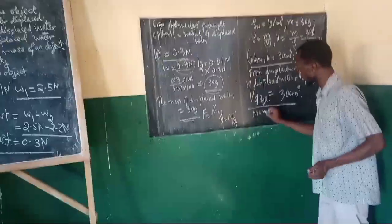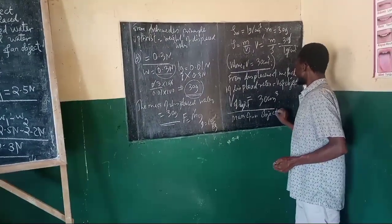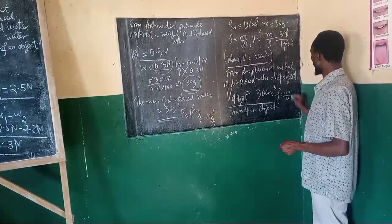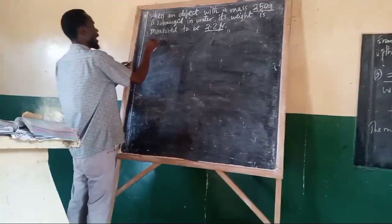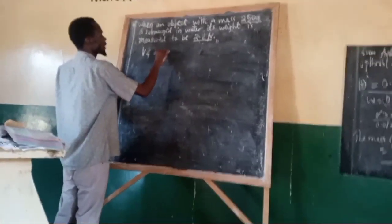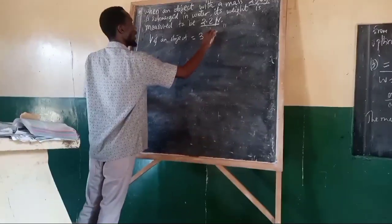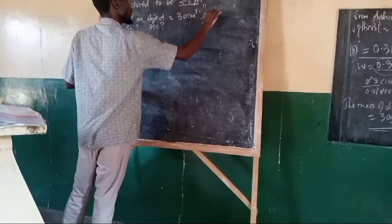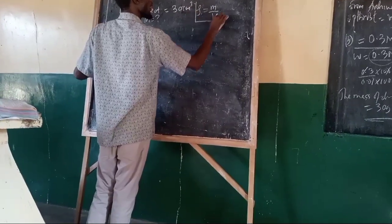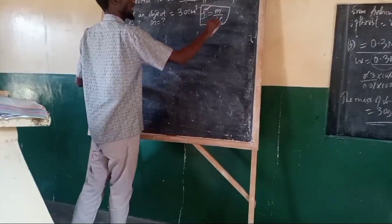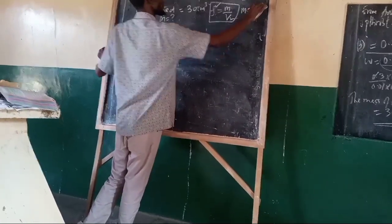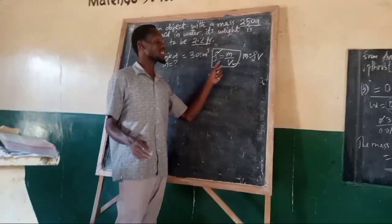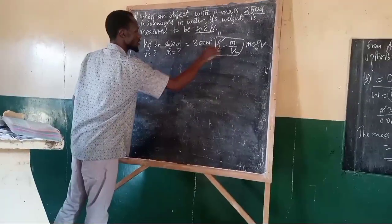The next question is to determine the mass of an object. Mass of an object can be obtained from density and volume using density equals mass over volume. We have the volume of the object, which is 30 cm³, but we do not have the density of the object, and we do not have the mass. We cannot find mass until we have the density. So we need to first find density.